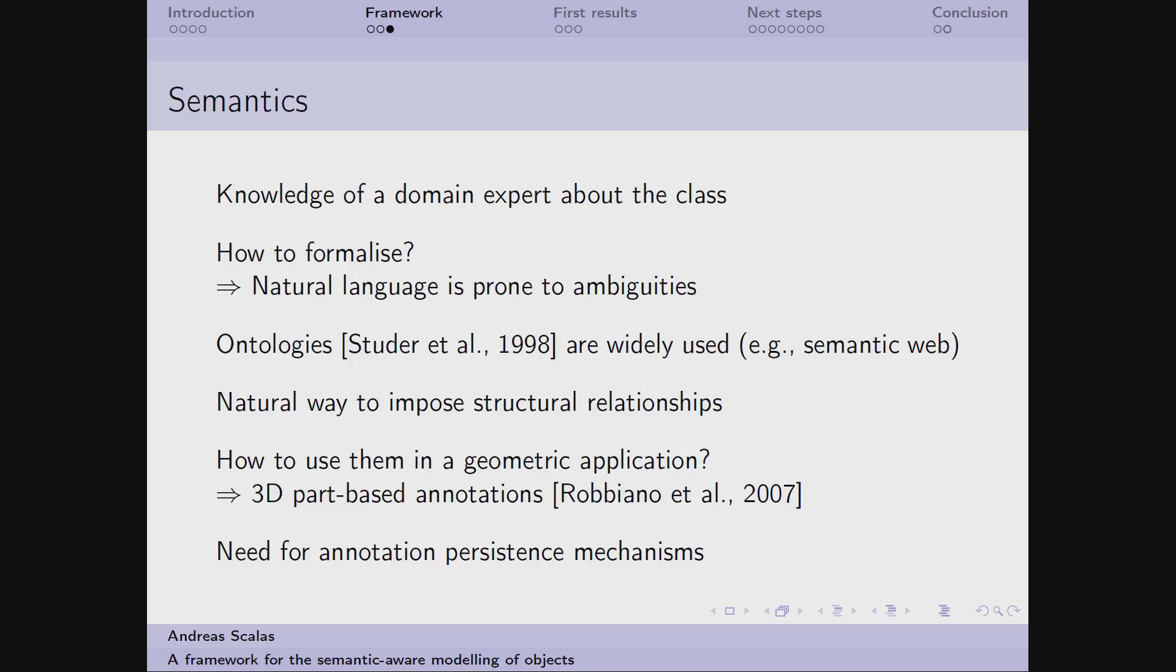Then the link between the semantics and the geometry is given by what is called 3D part-based annotation, and consists in the association between selections of part of an object and some information of any kind. For example, text or multimedia. But I'm interested in the so-called tagging, that is associating some conceptual tags taken from the ontology to the selections of parts of an object. This association is extremely important for the template to be effective, and in fact I need to ensure its persistence after any kind of transformation.